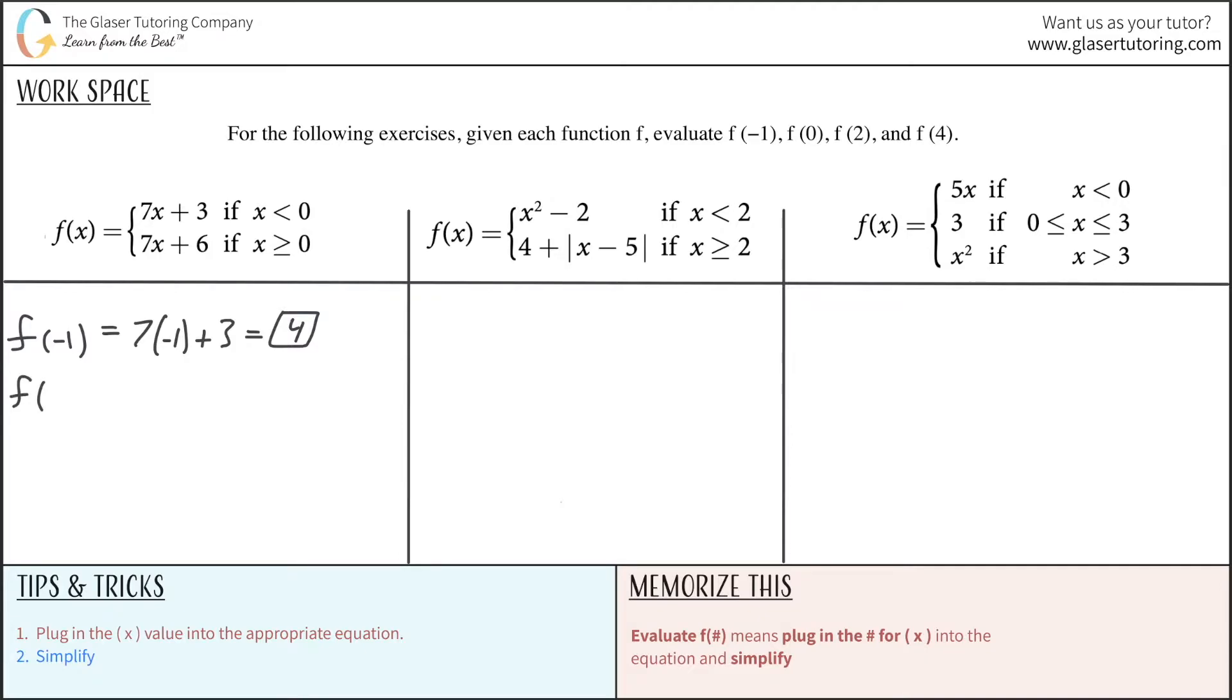Now we're going to look at evaluating f of 0. You have to figure out which constraint it falls under, and it falls under this constraint because it says to use this equation when x is greater than or equal to 0. So that being the case, I'm going to do 7 times my x value of 0 plus now 6. So that works out to be 6.